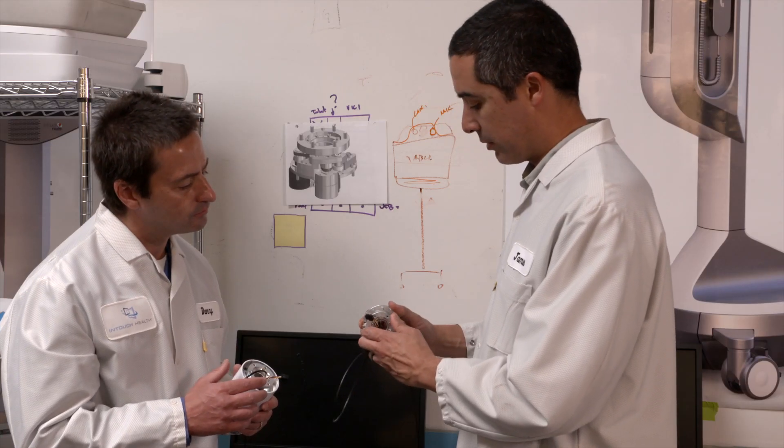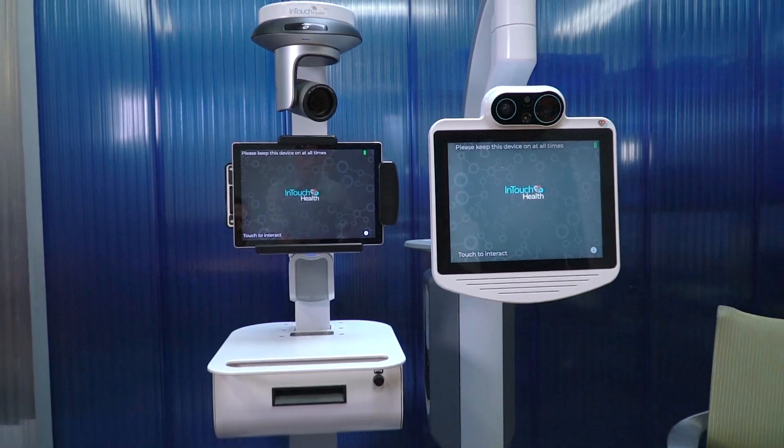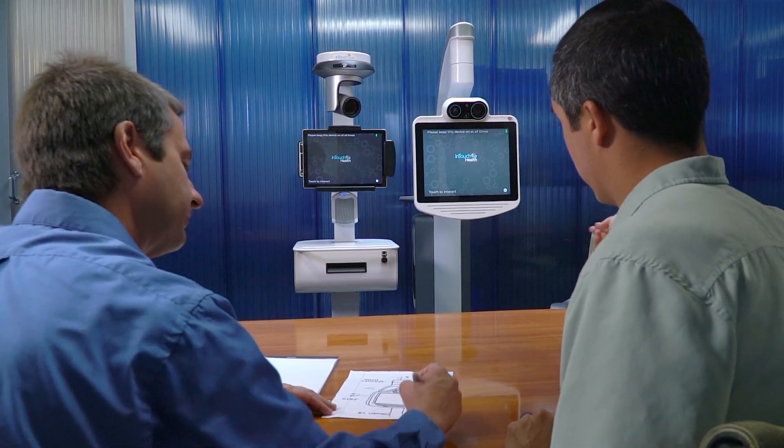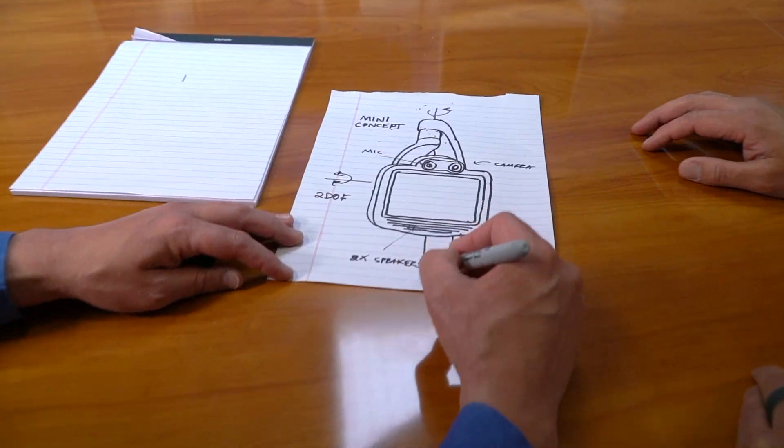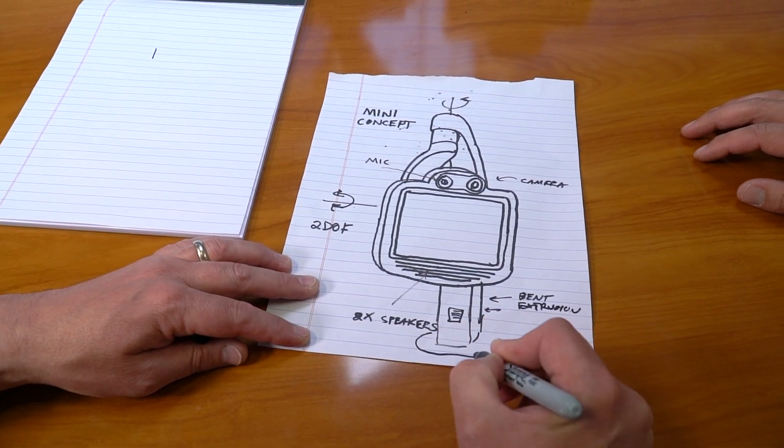Initially we started in the hardware team coming up with some concepts of how we might accomplish what the product team was looking for. We started drawing up some sketches and what we liked about the VG, what we liked about the light, and we thought of how we could integrate that in a package that would make sense for a new hardware development.